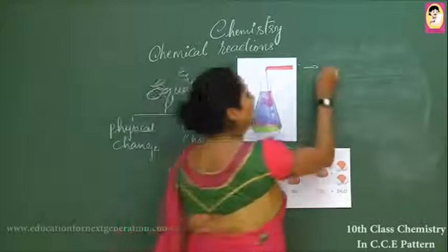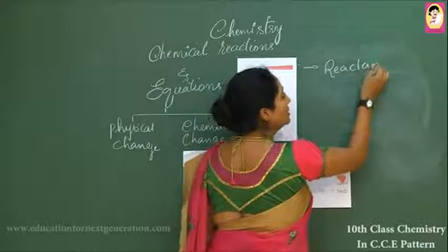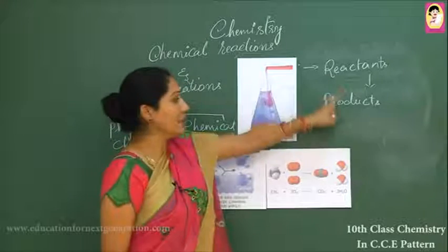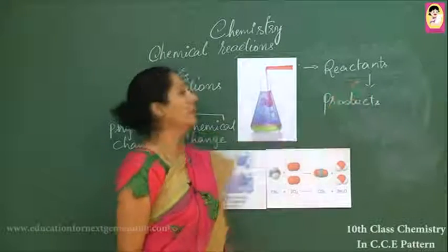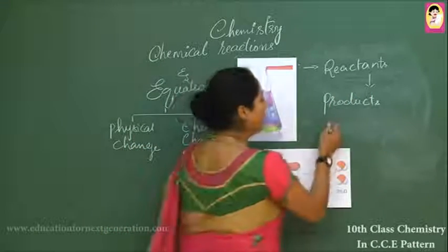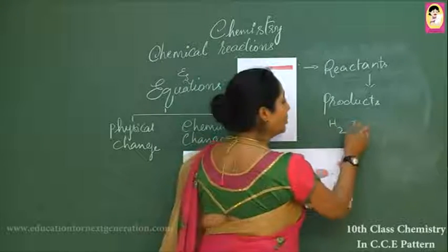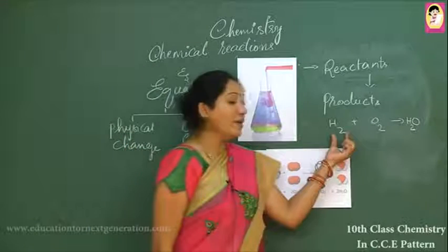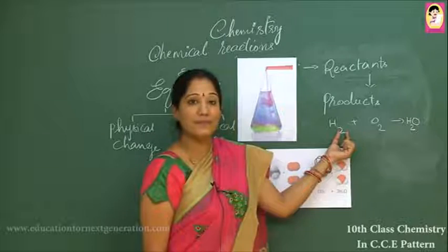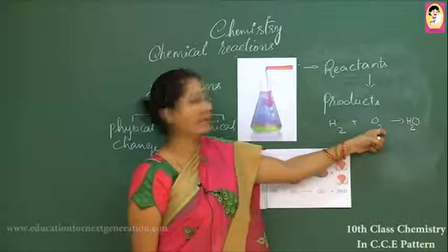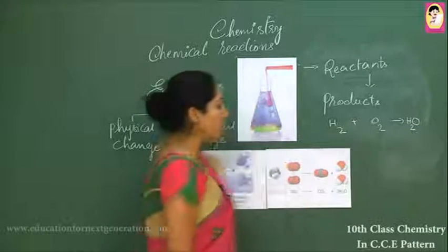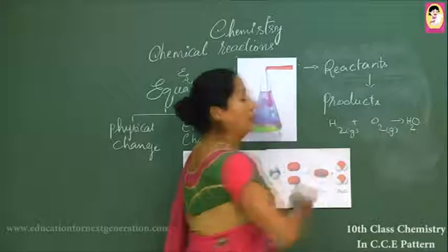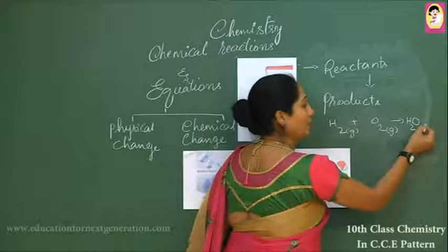Reactants and products are separated by an arrow during a chemical reaction. For example, hydrogen reacts with oxygen to give rise to a water molecule. One molecule of hydrogen — that is two atoms of hydrogen — reacts with one molecule of oxygen — two atoms of oxygen — giving rise to one water molecule. Here hydrogen is a gas, oxygen is a gas, but the component obtained is a liquid — a colorless liquid.